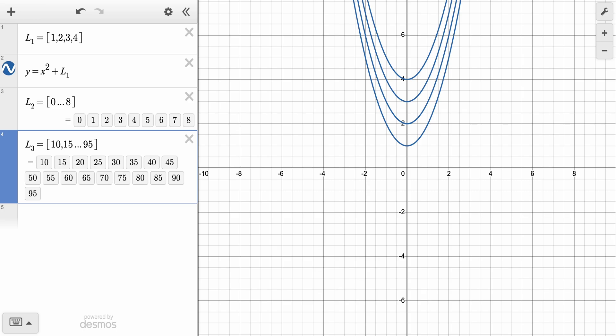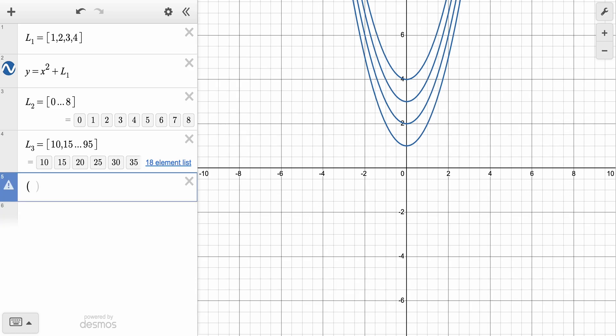We already saw how lists can work in an equation back with list L1, but we can use this in other ways too. Let's use list L2 to create ordered pairs. If you add the point L2 comma sin of L2 to an expression line, the calculator will generate 9 ordered pairs based on the values in list L2.